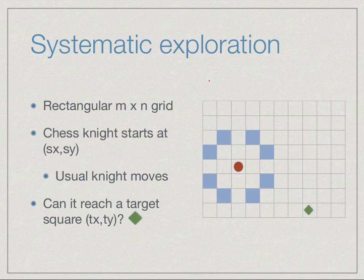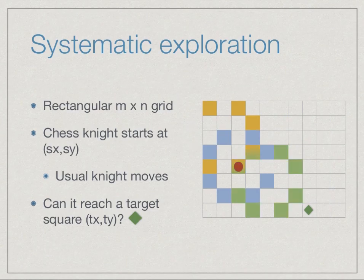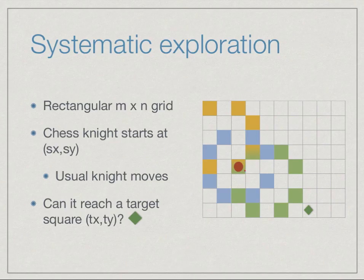In the first step we examine the eight squares reachable in one move from the starting position and mark them. We can then pick one of them and explore its neighbors — some may be outside the grid (which we discard), and one may bring us back to the start. As we explore further squares their neighbors can overlap with previously marked squares, so we need a systematic way to avoid going in loops or marking a square twice.